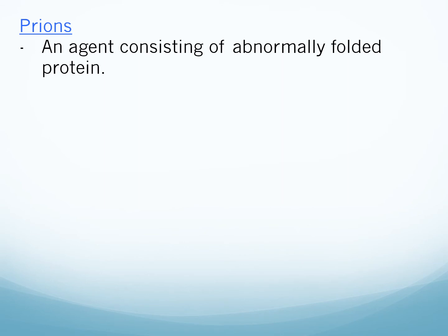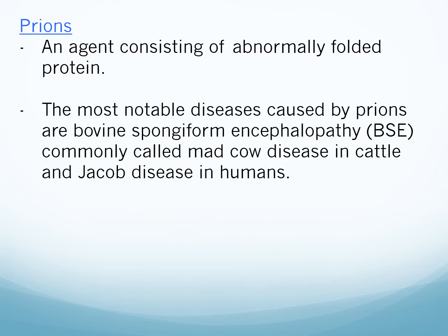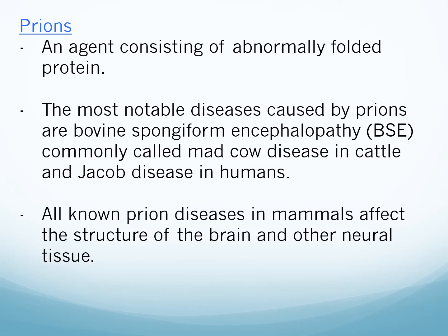Next we move on to prions. Prions are agents consisting of abnormally folded protein — the protein structure is not proper. The most notable diseases caused by prions are bovine spongiform encephalopathy (BSE), commonly called mad cow disease in cattle, and Creutzfeldt-Jakob disease in humans. Jakob disease is a neurodegenerative disease in which neurons get degenerated. All known prion diseases in mammals affect the structure of the brain and other neural tissue.